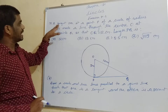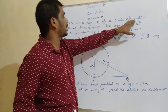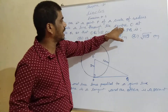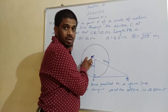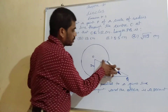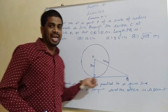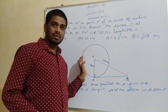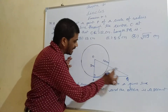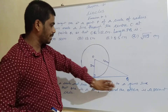Third question: a tangent PQ at a point P of a circle of radius 5 cm meets a line through the center O at a point Q, so that OQ is equal to 12 cm. We have to find the length PQ. We know that every tangent is perpendicular to the radius, so this will be a right-angle triangle. We can apply the Pythagorean theorem: OQ squared equals OP squared plus PQ squared.